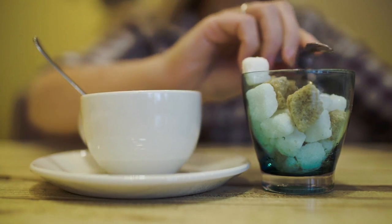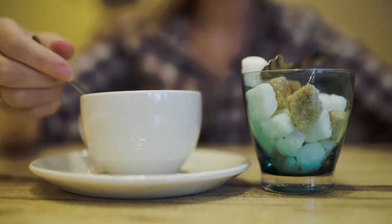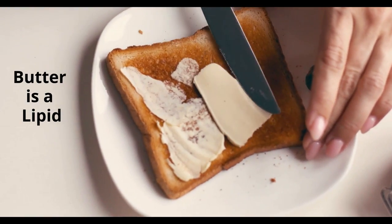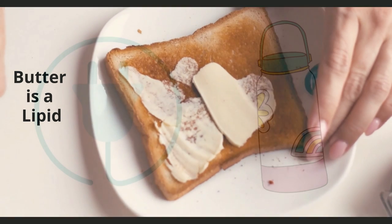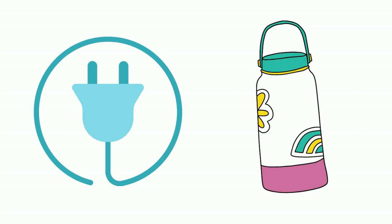Some covalent compounds dissolve in water like sugar, and others do not like lipids. Most covalent compounds are poor conductors of electricity and poor thermal conductors.